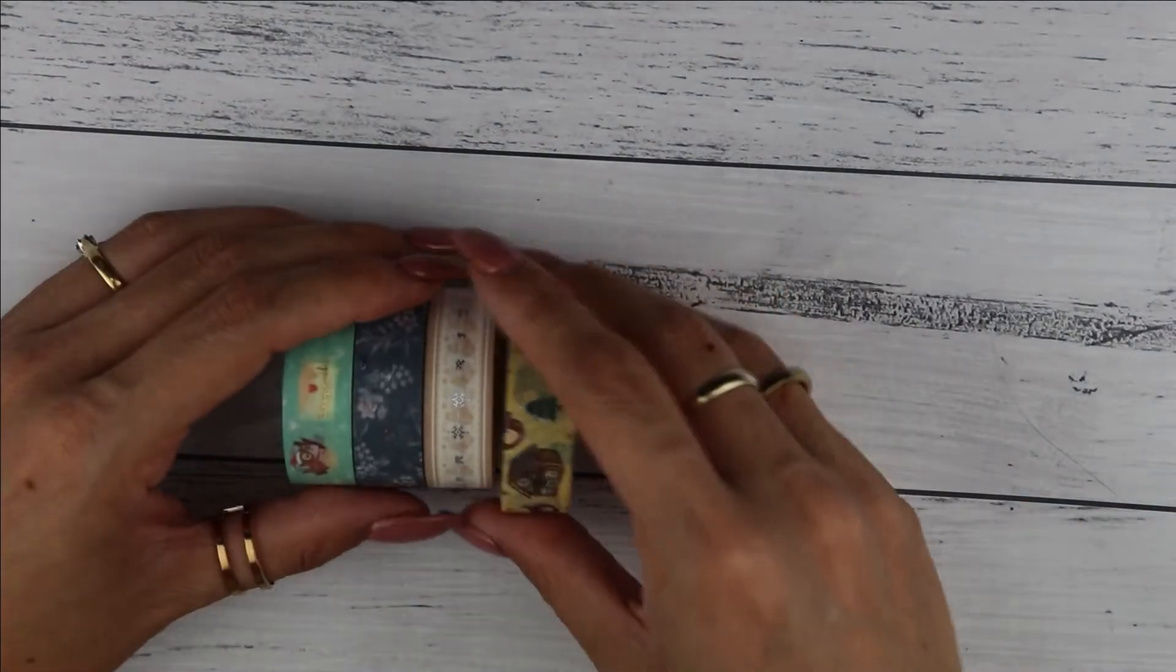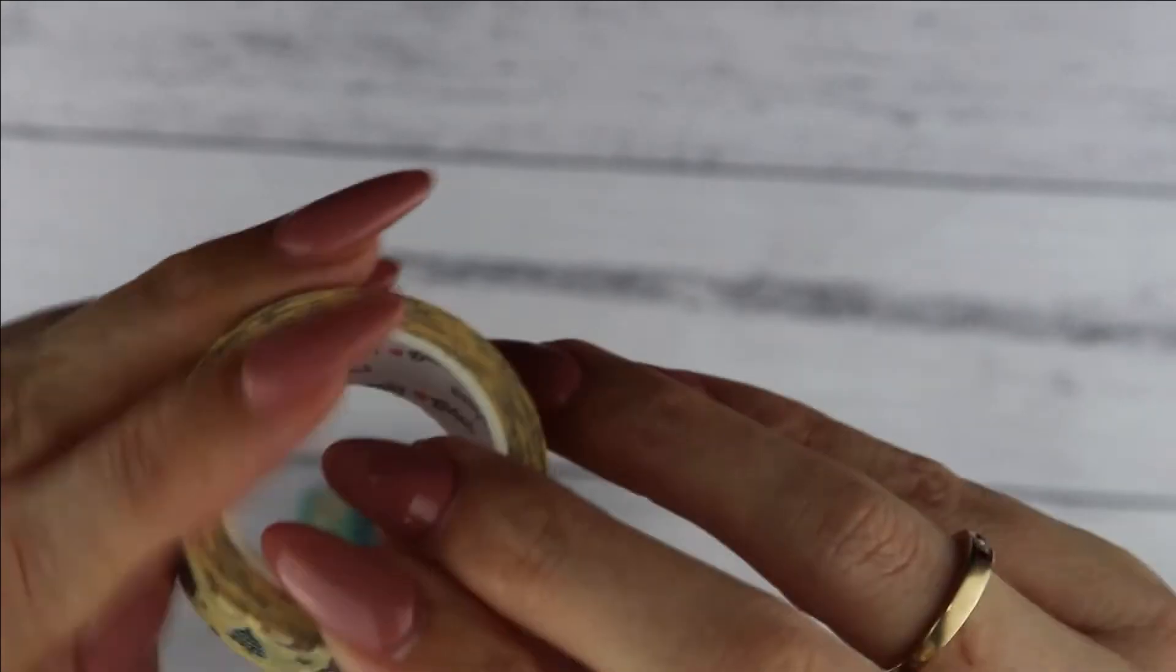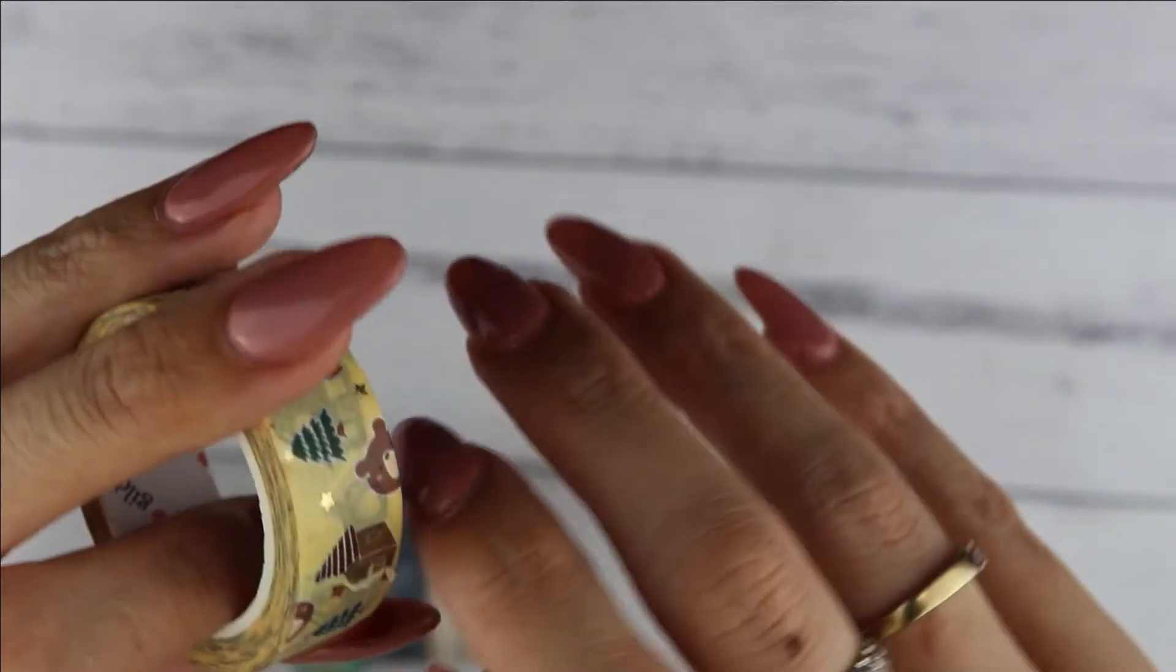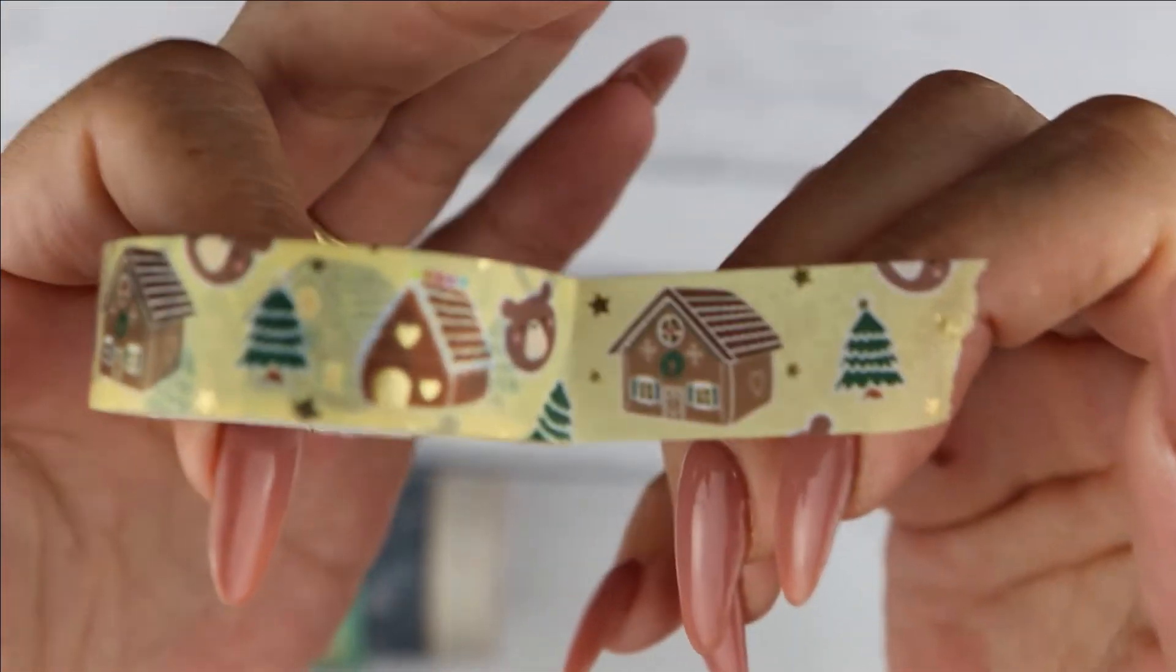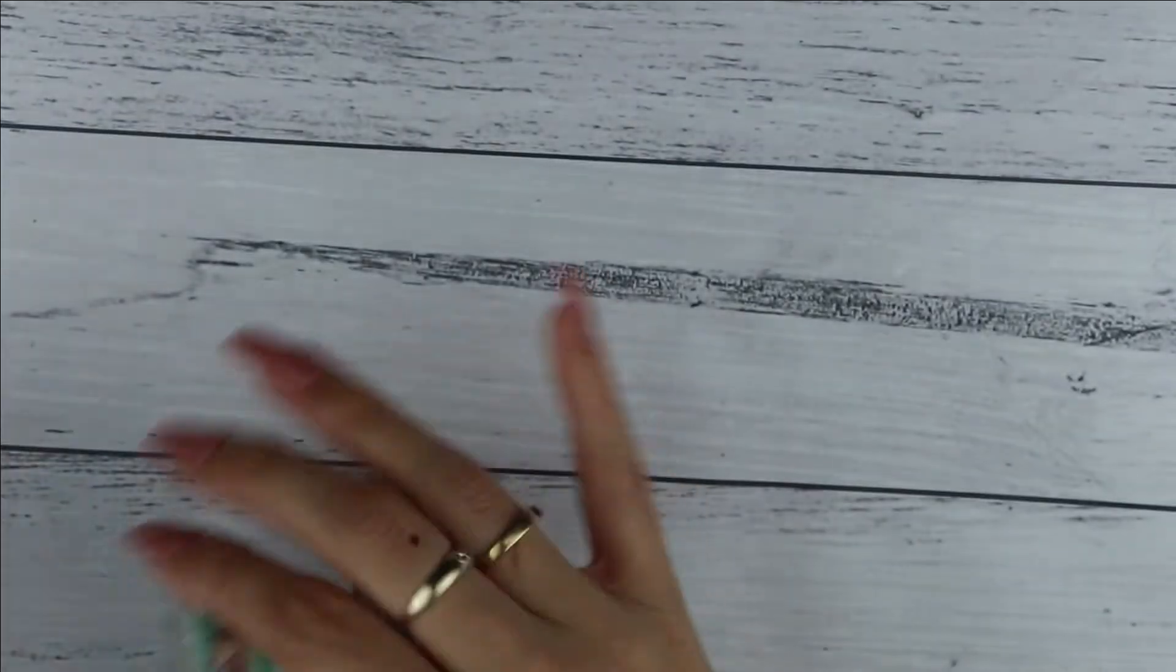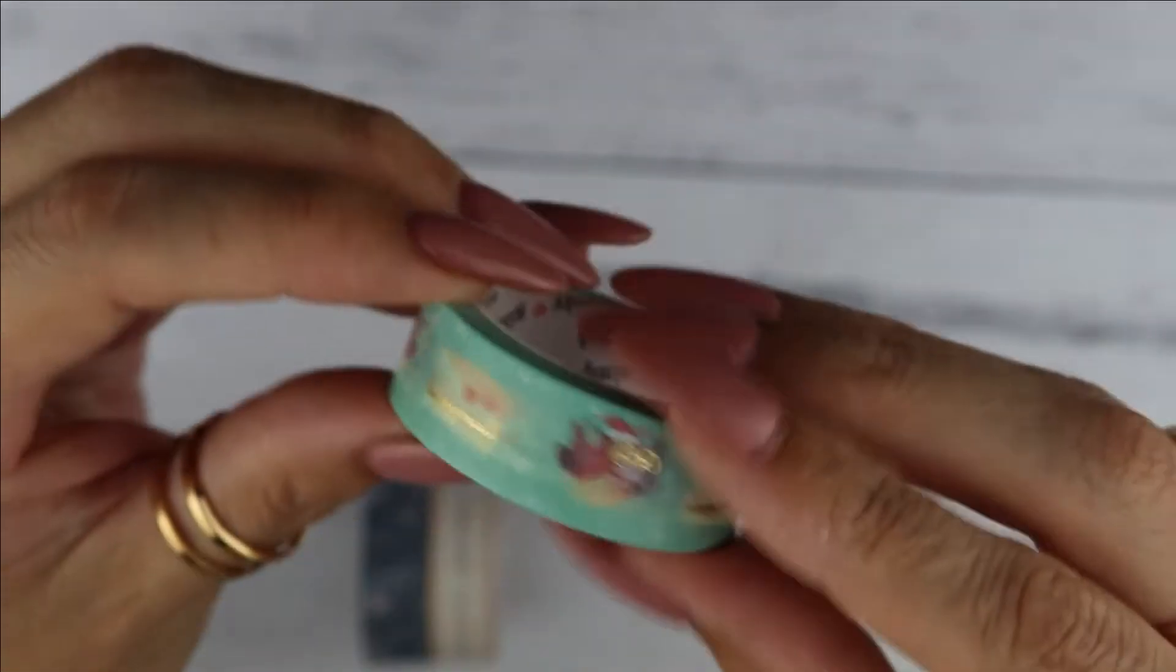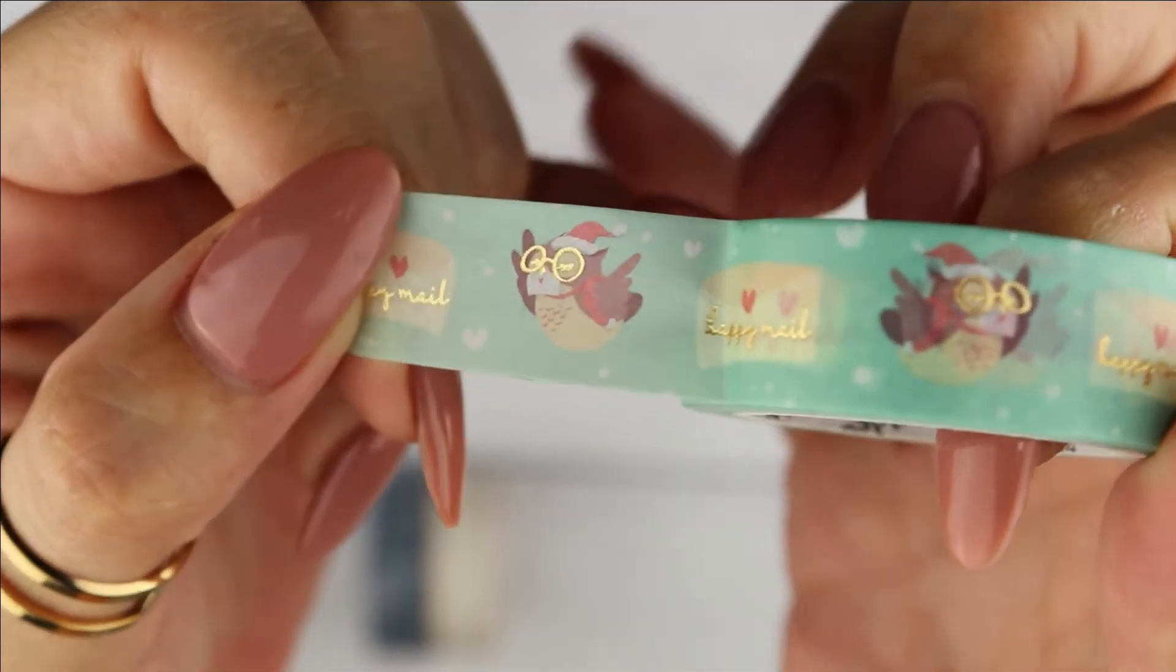The next ones that I want to show are the gingerbread house, and this is just such a special, stunning washi. I used it on one of my spreads, you can check the plan with me, I'll link it for you on the screen. This is such a beautiful washi, it really really makes the spread pop. I also got the happy mail owl but this one was in green and it's festive as well, so the owl is wearing a Christmas hat, a Santa's hat, and it's also in gold foil. It's just the most adorable thing ever.